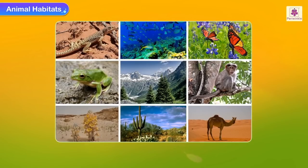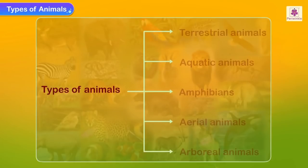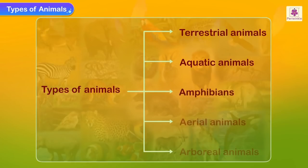Types of animals according to their habitats: animals can be classified into terrestrial animals, aquatic animals, amphibians, aerial animals, and arboreal animals.